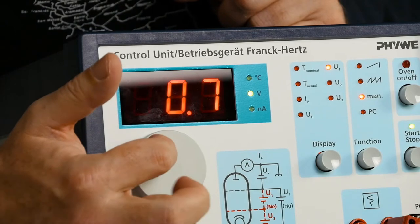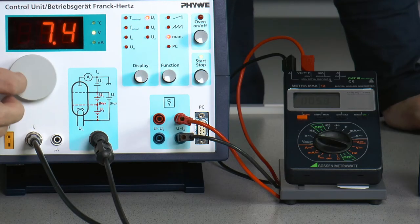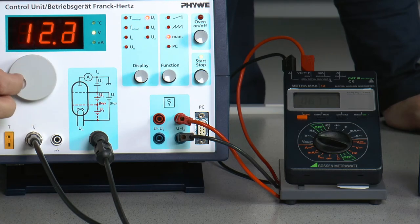Near the maxima, it is recommended to measure in smaller steps of the acceleration voltage. The acceleration voltage can be displayed on the operating device while the voltage proportional to the current can be read off the display of the voltmeter.